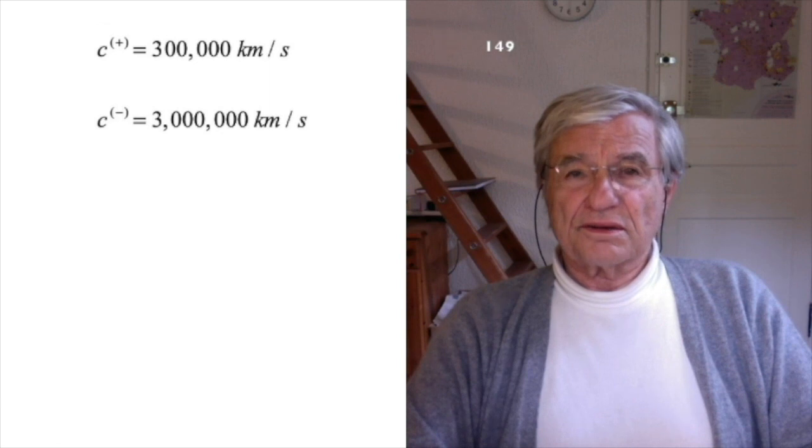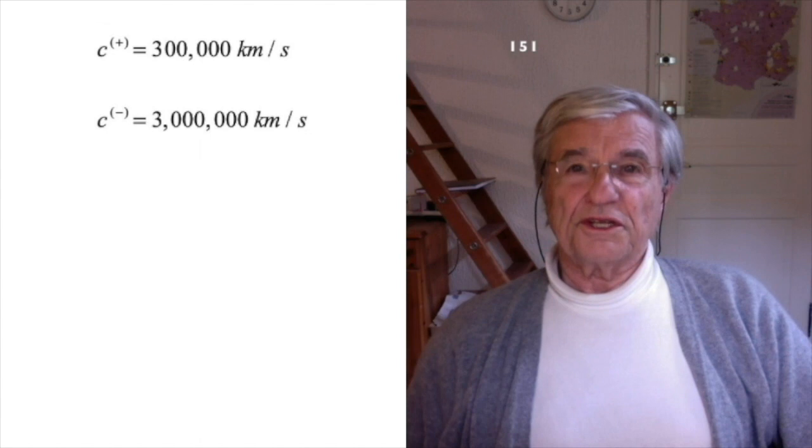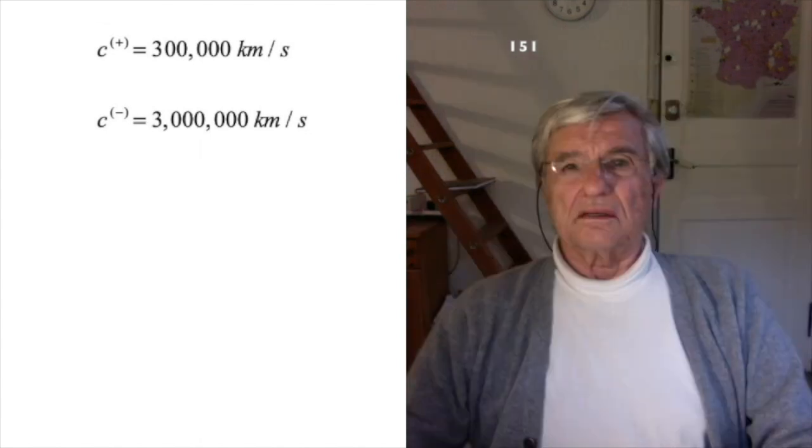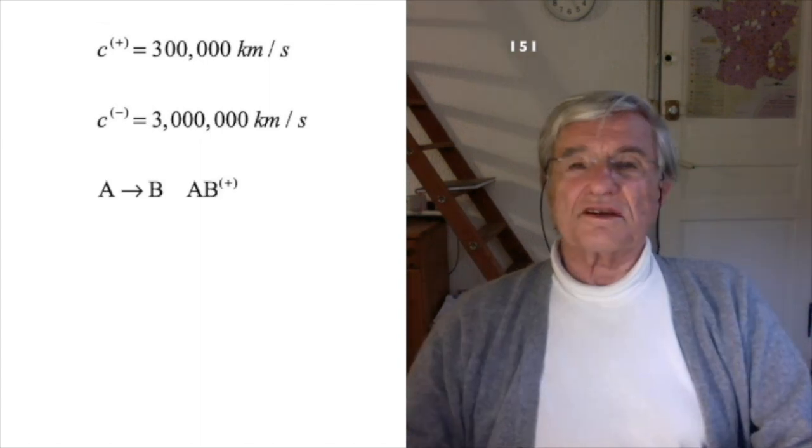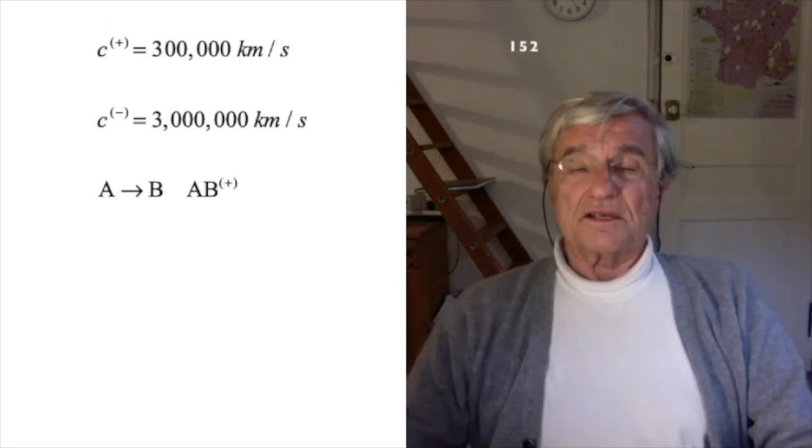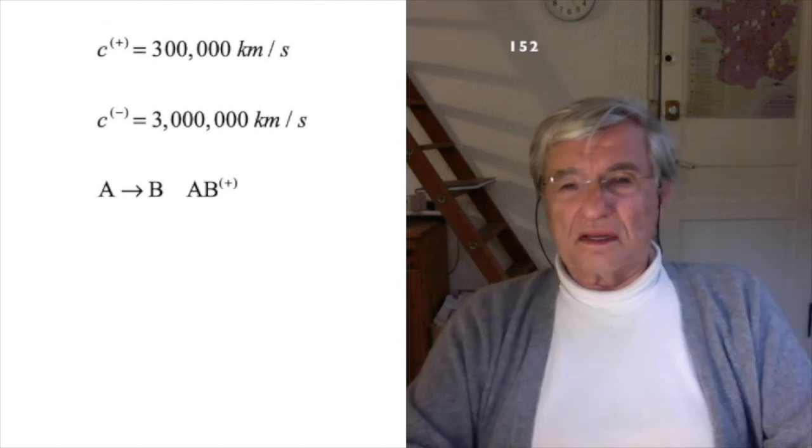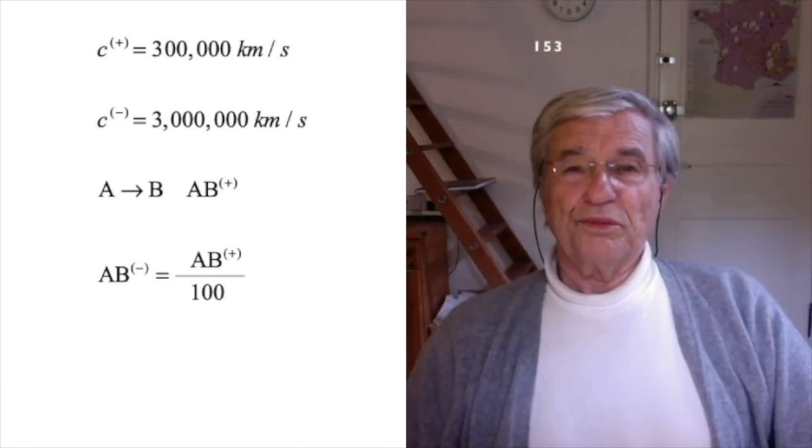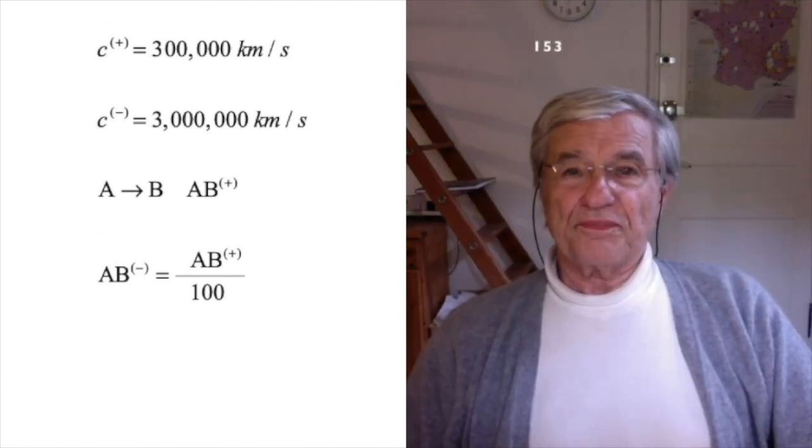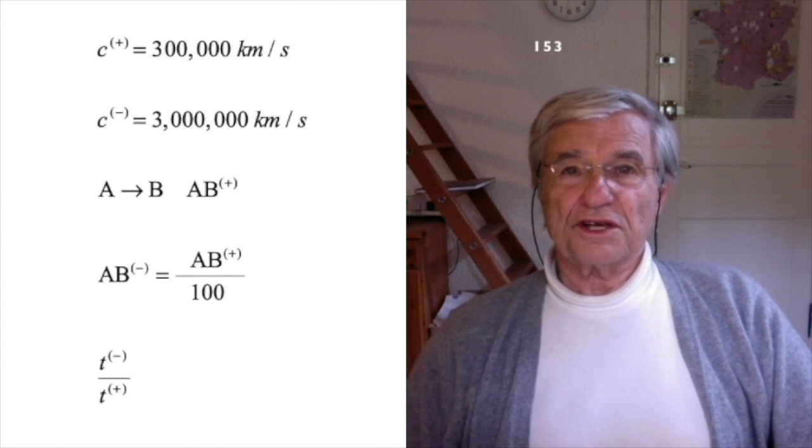If one moves from point A to point B using positive mass vehicle, the distance is then AB+. If you are now traveling in a vehicle with negative mass, the distance is AB minus, 100 times shorter. By combining these two values, we find that the travel time can be reduced by a factor of 10 times 100, i.e. a factor of 1,000.